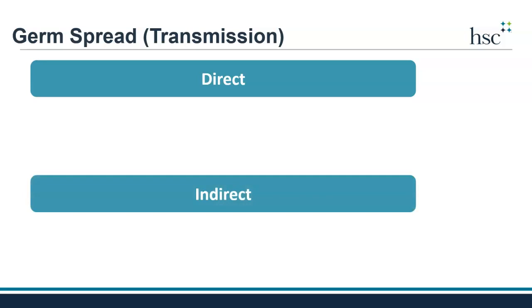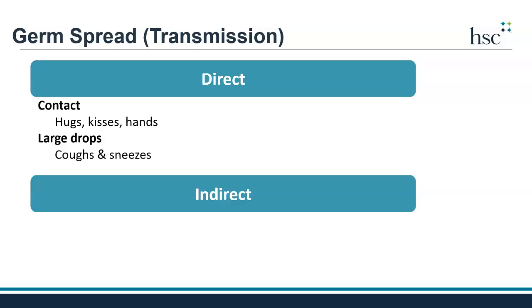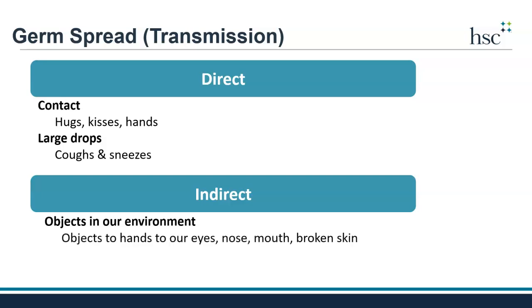Germs spread directly from a person to another person through contact with them, like hugging or kissing. Direct spread also happens when a person coughs or sneezes very close to you and large drops containing germs from their coughs or sneezes directly enter your body. Germs spread indirectly when objects and surfaces in our environment get contaminated with germs. We touch those objects or surfaces and then touch our eyes, nose, mouth, or other areas where germs can get into our bodies, like broken skin such as a cut or wound.